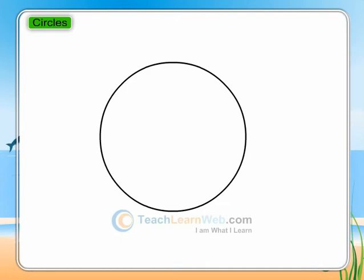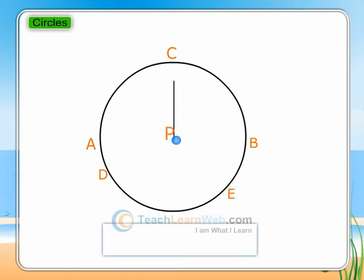Here is a circle with center P. A, B, C, D, and E are points on the circle. PC is equal to AP is equal to PB and are the radii of the circle.